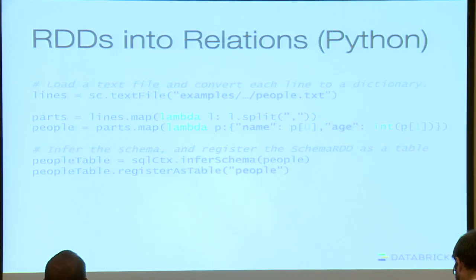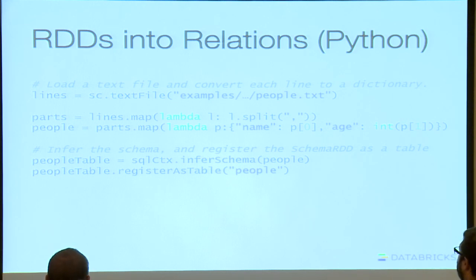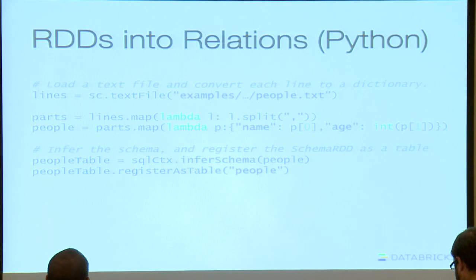So how do you actually do this? If you've got data in an RDD and want to turn it into a table, it's actually relatively concise. In Python, you load in a text file, split it by commas, and break it into parts. All you need to do is create a Python dictionary where the keys are the column names. Once you've created an RDD containing these dictionary objects, you pass it to a SQL context and tell it to infer the schema — it looks at all the columns and creates a table.